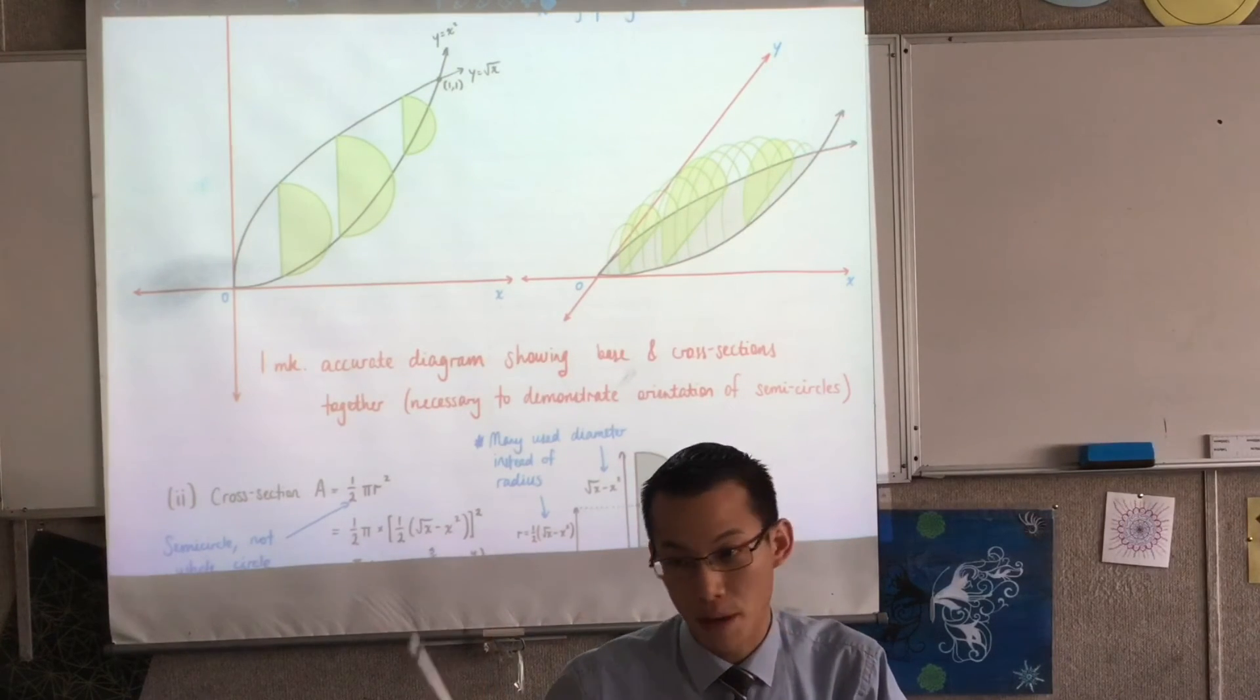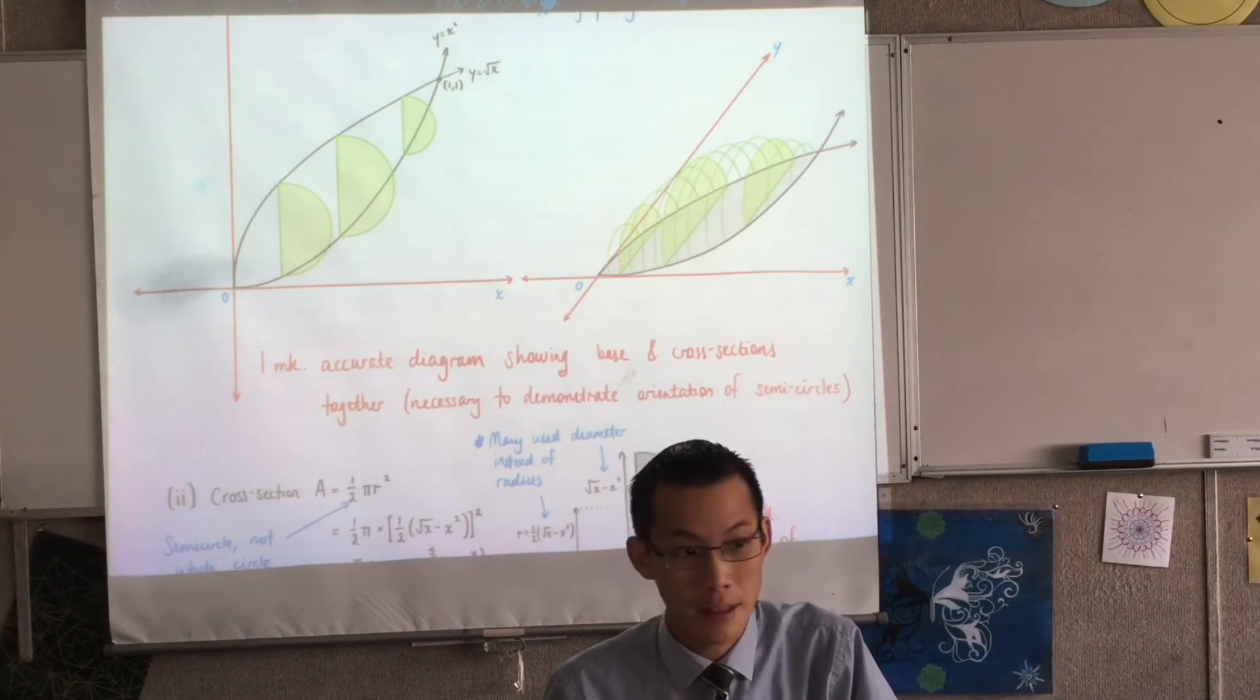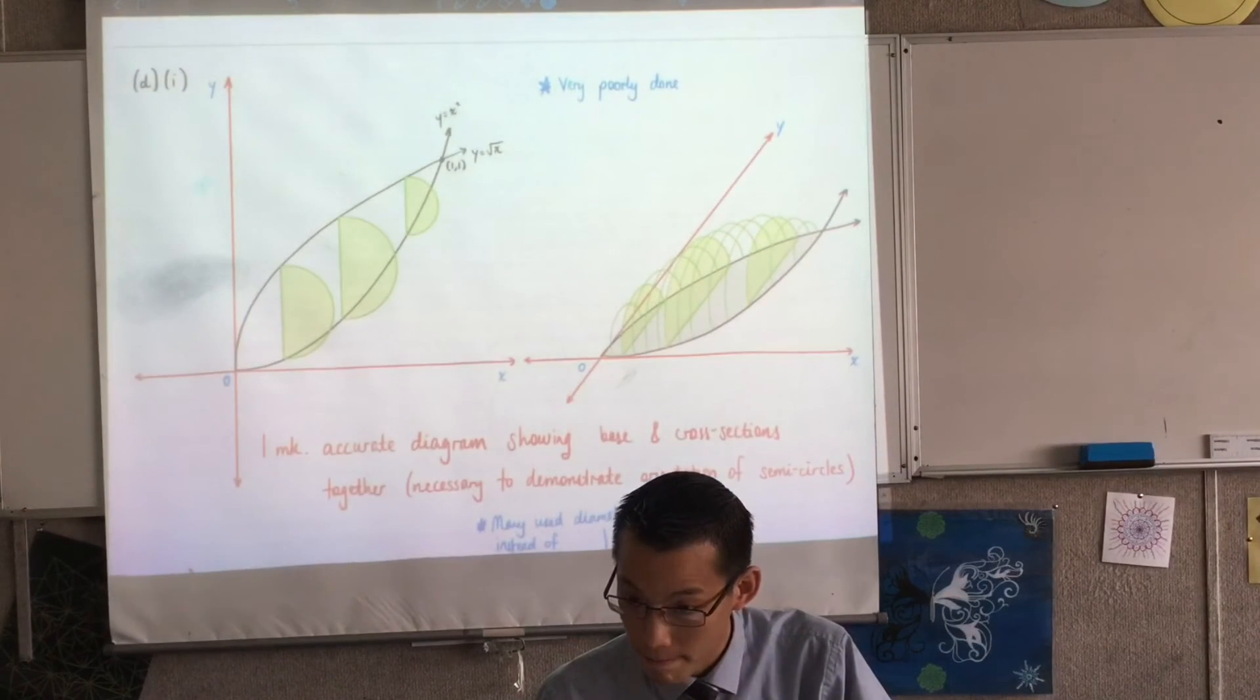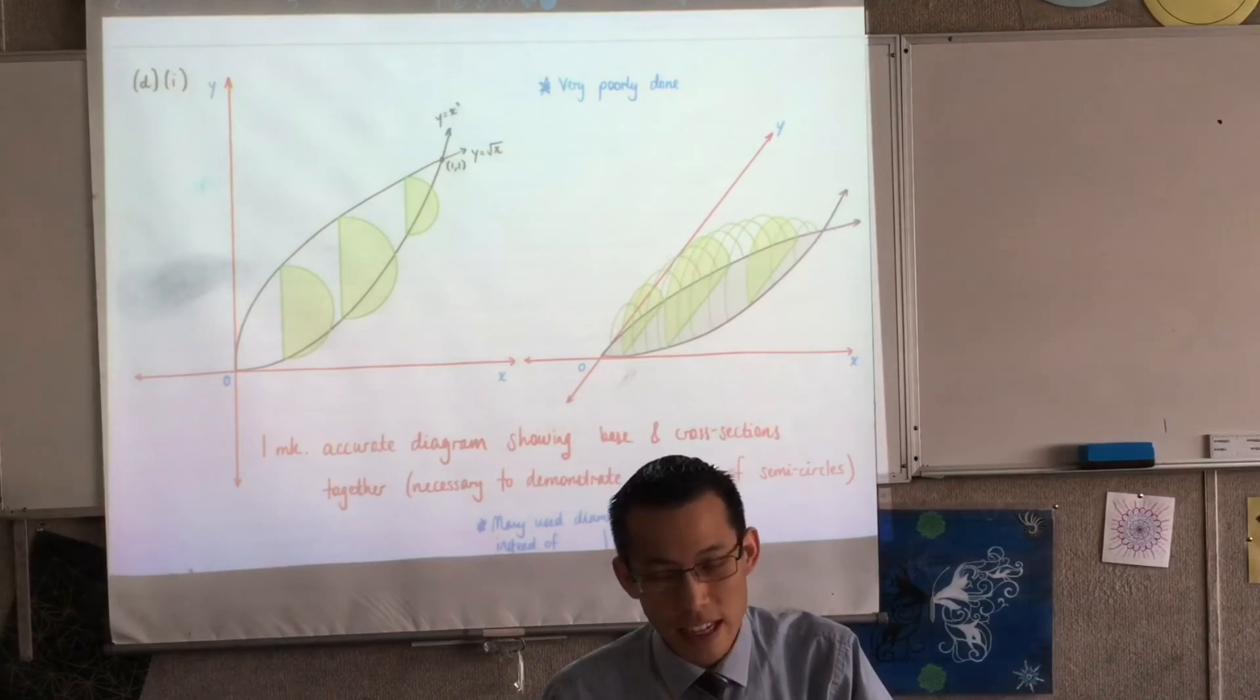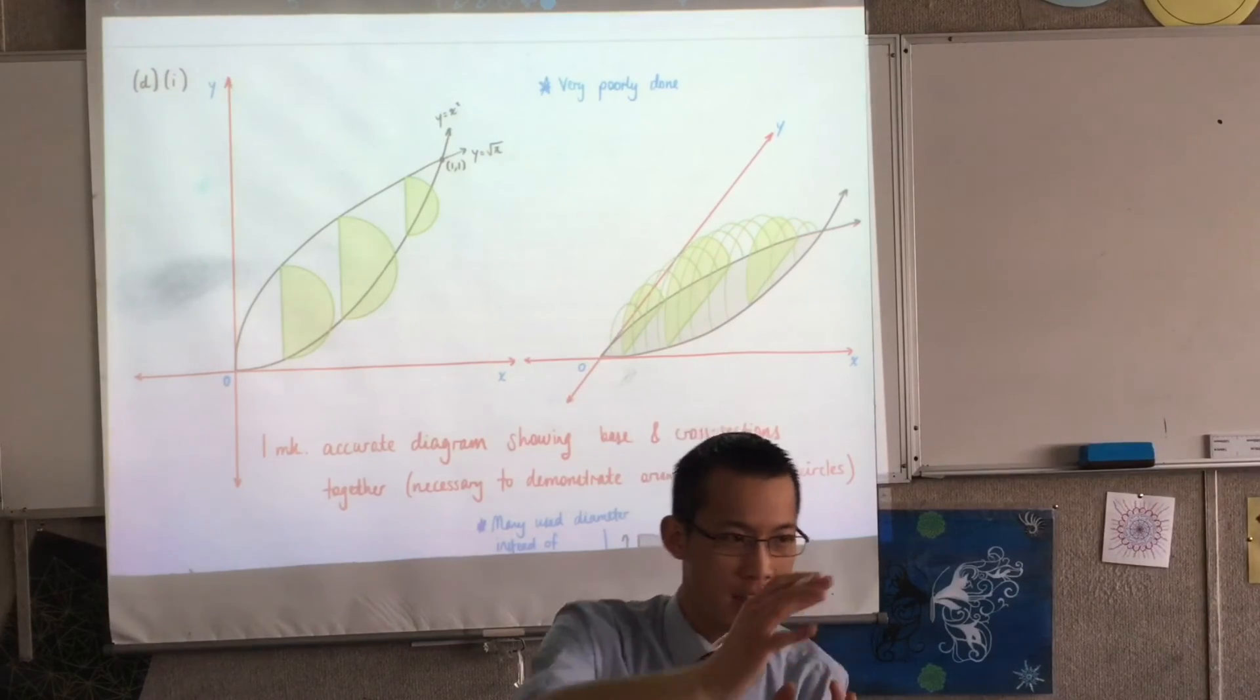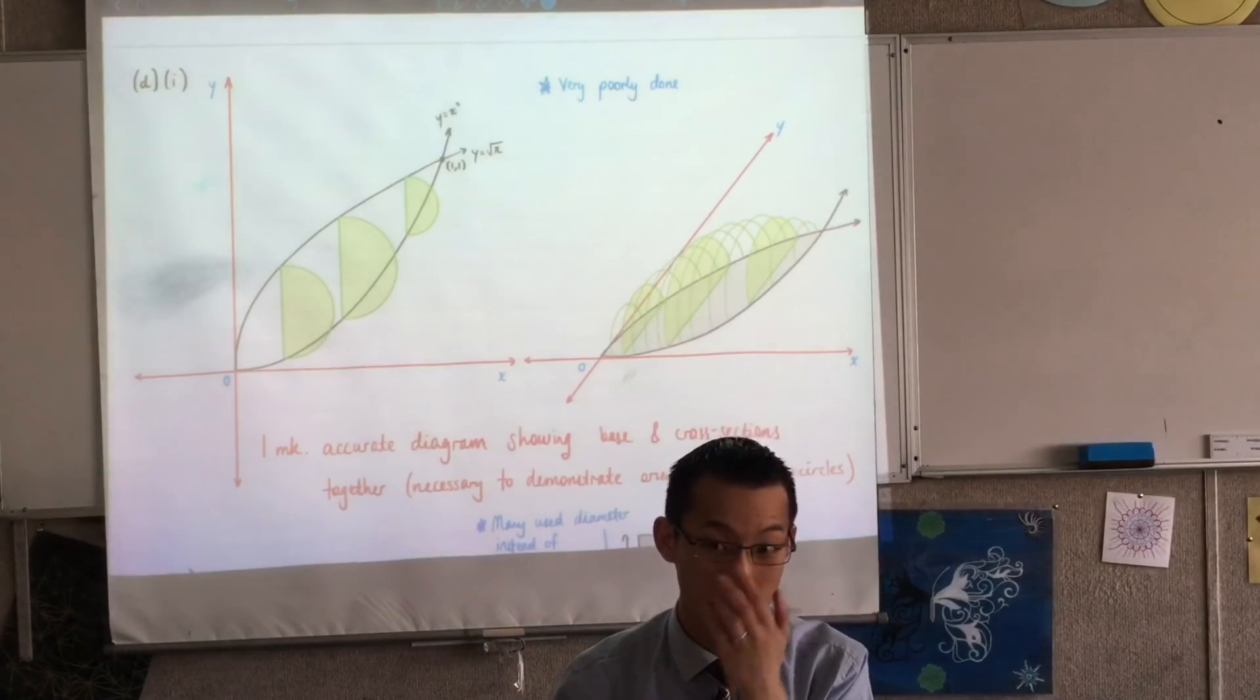So I'm going to put those guys back. It was a lot harder to draw an oblique looking diagram, like the one I have on the right-hand side. But those of you who did that had a much more, it's a better diagram basically. I've put the one on the left-hand side there because it was perfectly acceptable if you did that. I really need to see the cross-section together with the base at least once, at least once so I can see that you get how they're oriented together.